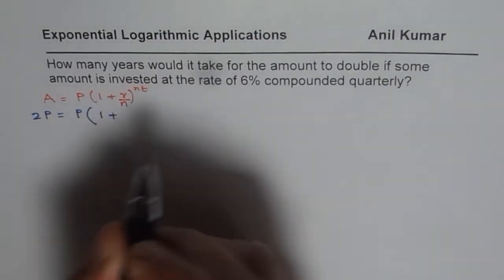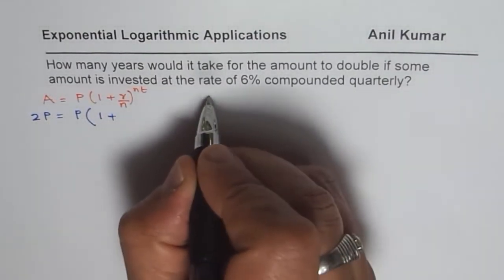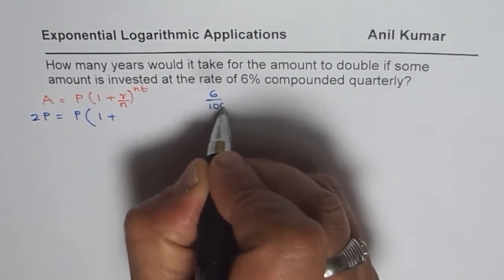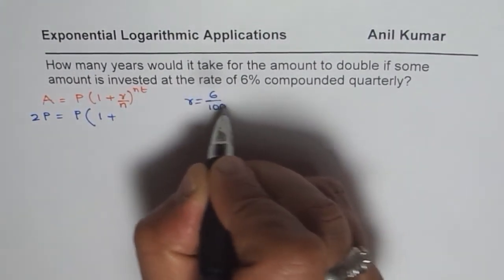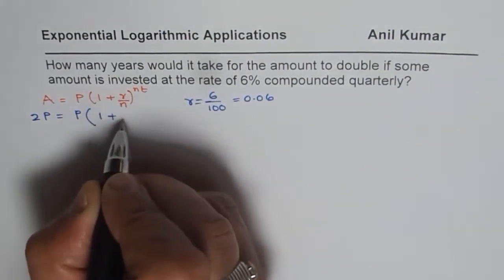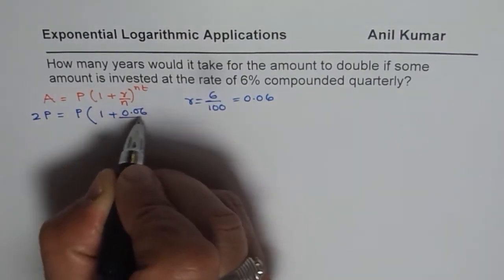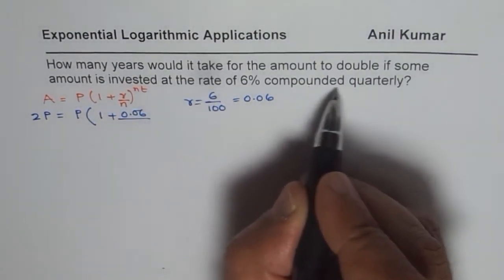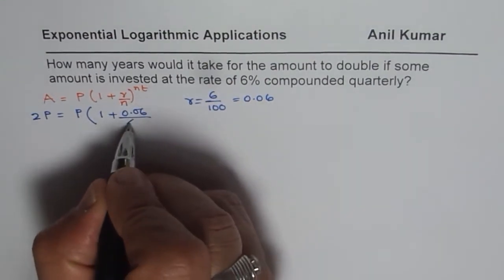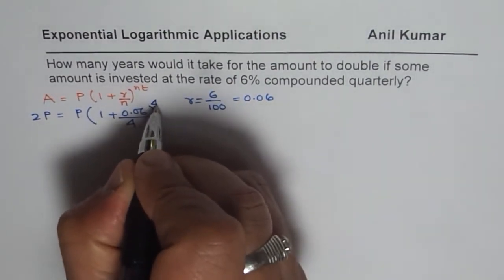The rate of interest is 6%, which means 6 over 100, so R equals 0.06. We replace this by 0.06. The compounding period is quarterly, that means 4 times a year, so N is 4, and the exponent becomes 4 times T.